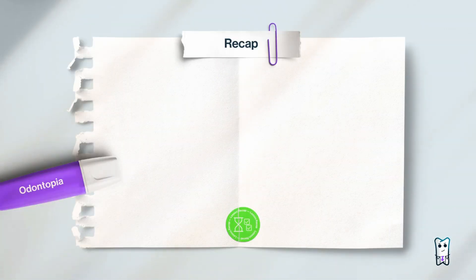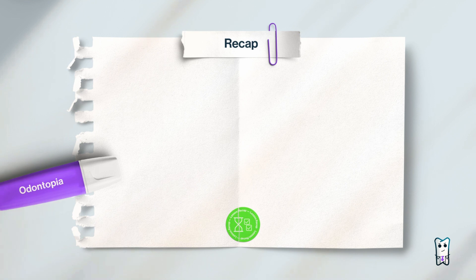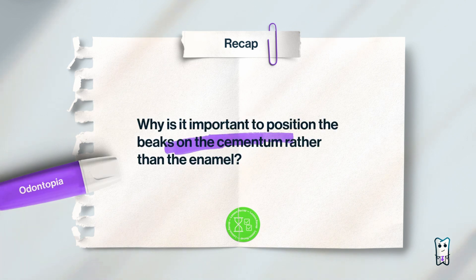Okay, let's recap. Why is it important to position the beaks on the cementum rather than the enamel?